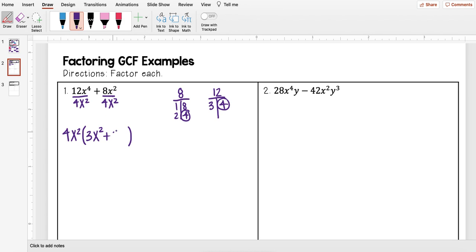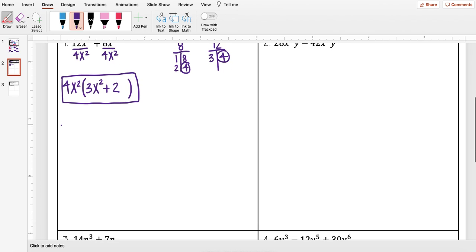8 divided by 4 I get 2. Then x squared divided by x squared. When I subtract those exponents I get 2 minus 2 which is 0. And anything to the 0 power is just 1, so those just cancel out. And so I get this answer. And that is our factored expression.